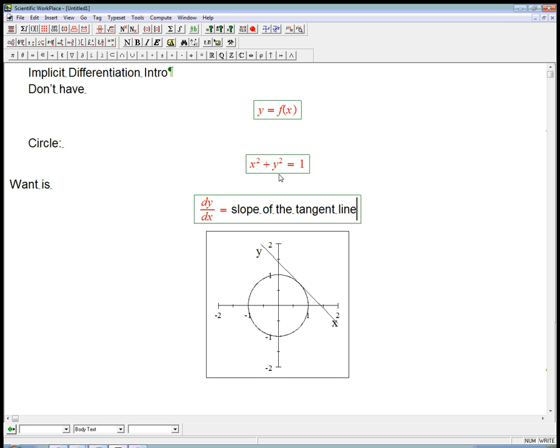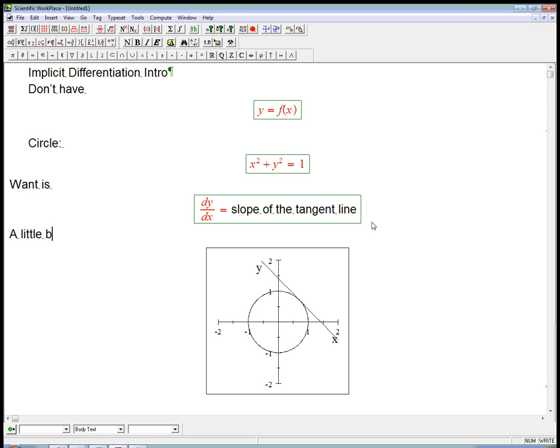That's for a circle. It's a very natural thing. We think about that in geometry before we even think about calculus. I've drawn a tangent line here at this point, and we'll talk about the coordinates of this point in a minute. And we'd like to get the slope of that tangent line as a function of the coordinates of the point. And the claim is we can do that without solving for y as a function of x.